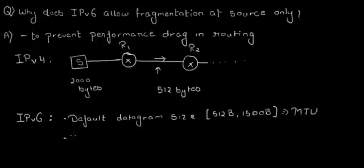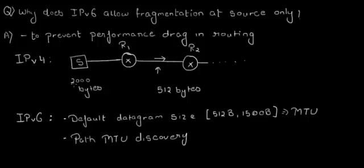A second way to deal with this is called Path MTU Discovery. Path MTU Discovery works as follows: the sender, before sending out data, would send out test packets and over a cycle would determine the maximum size of data that can be sent in a single frame or in a single IP datagram.